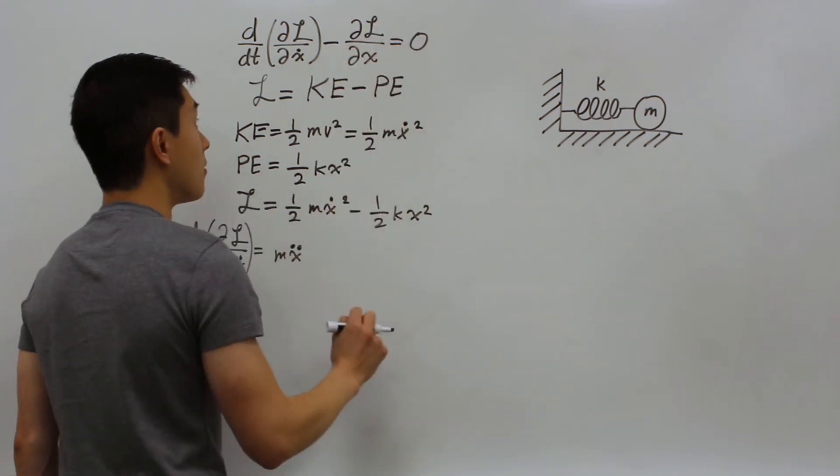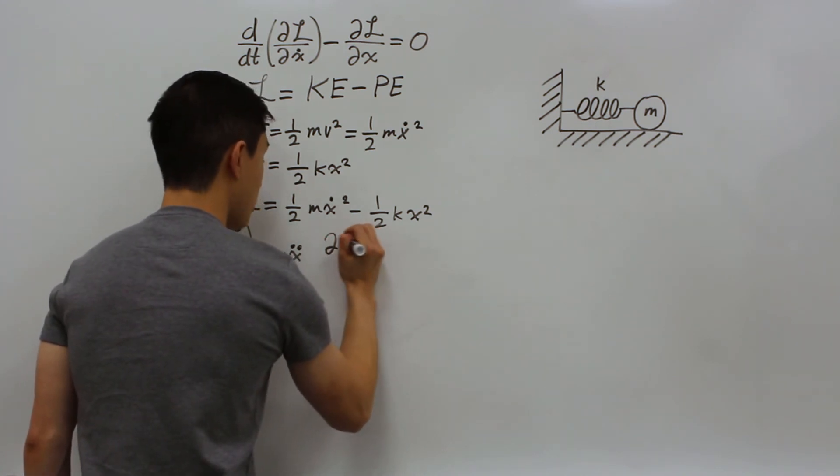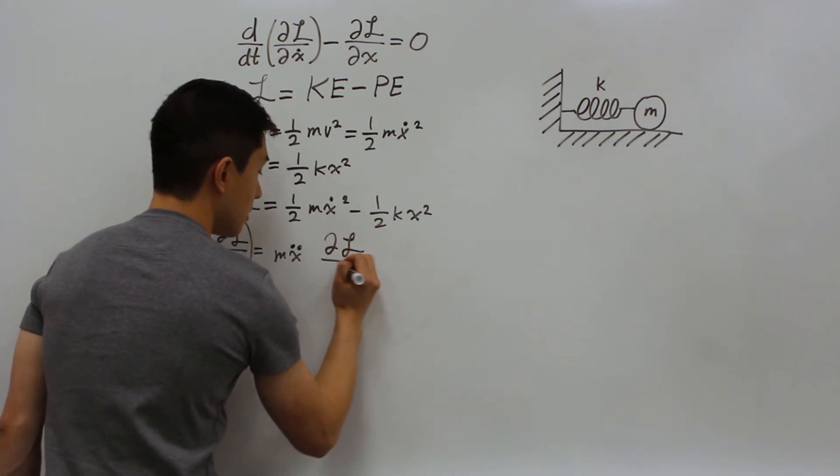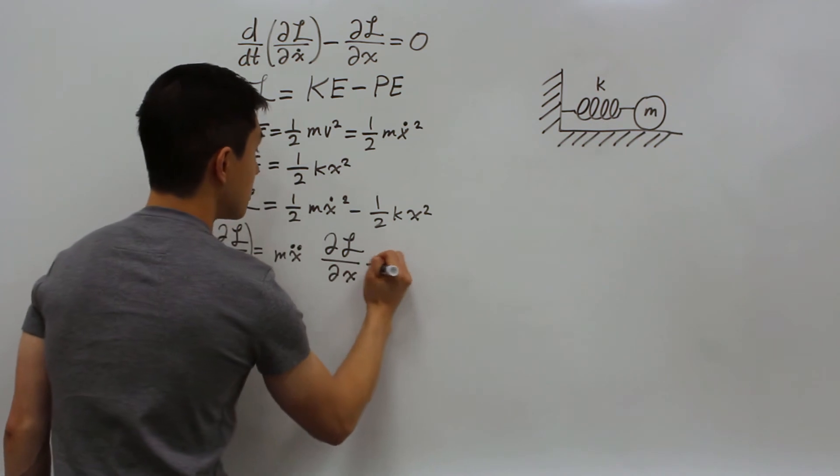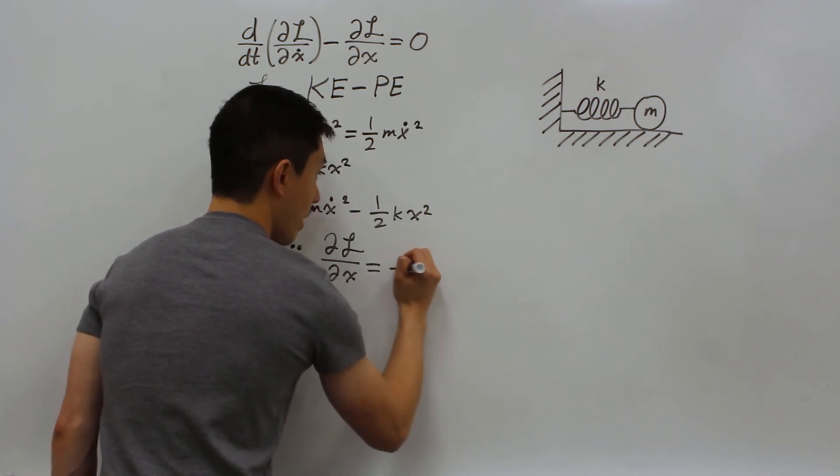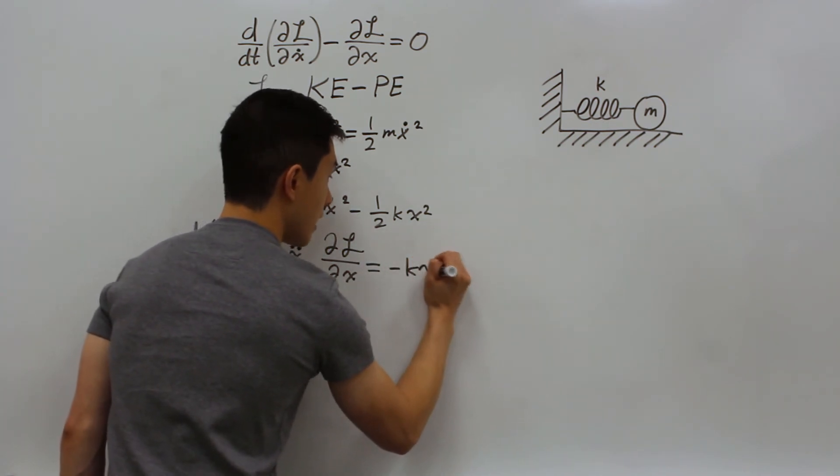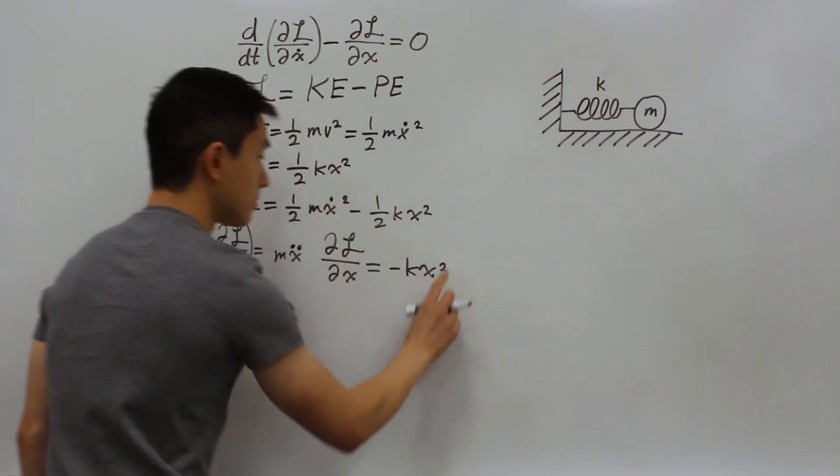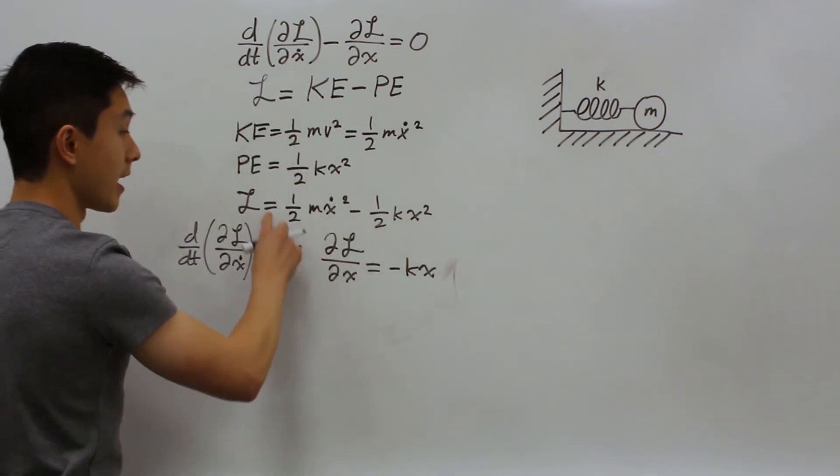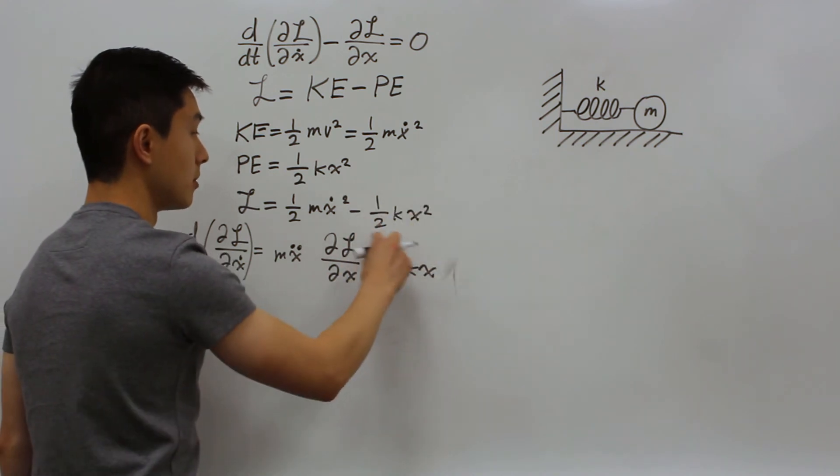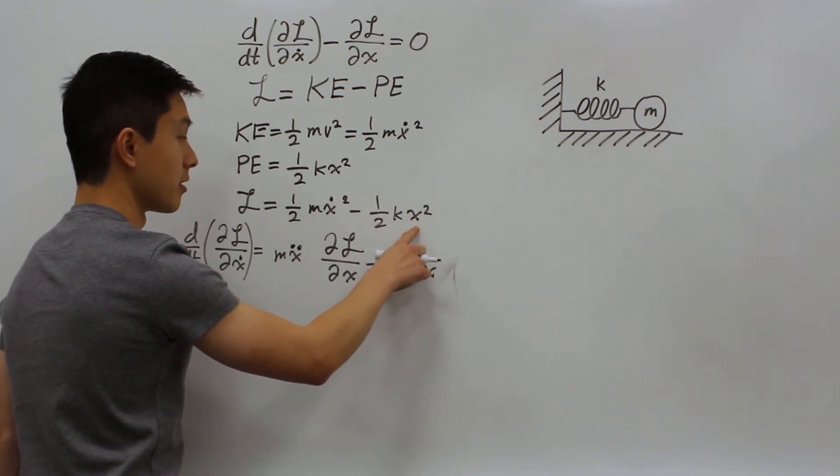Next, we can find the second term of our Euler-Lagrangian equation. The partial of the Lagrangian with respect to just x is minus kx. As the first term has no x term and the second term has the x term, which we can derive.